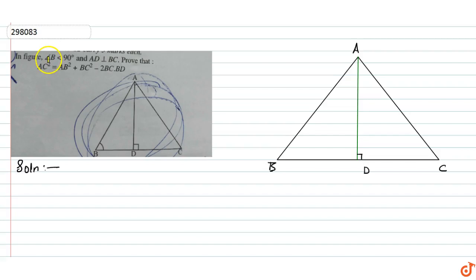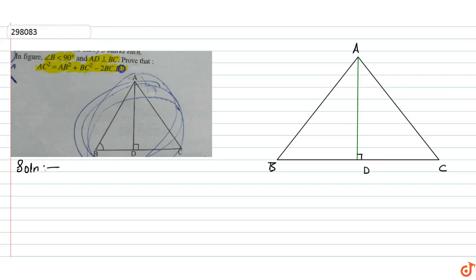In the figure, angle B is less than 90 degrees and AD is perpendicular to BC. We have to prove that AC square is equal to AB square plus BC square minus 2 into BC into BD.